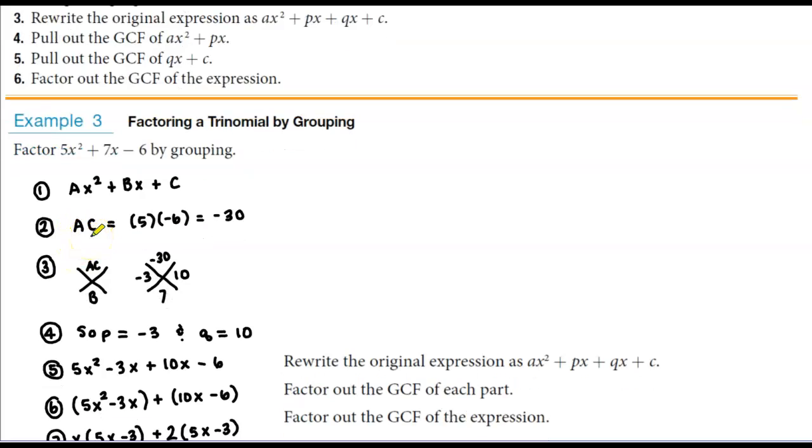Using the AC method, we take a and multiply it by c. The value of a is 5 and the value of c is -6.